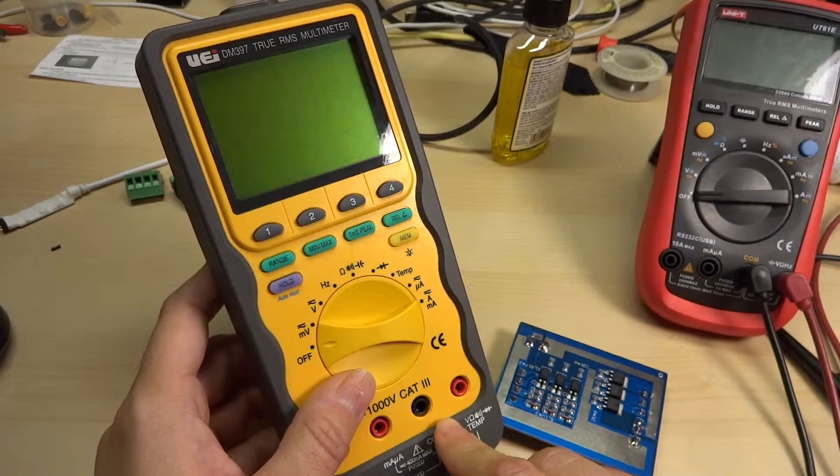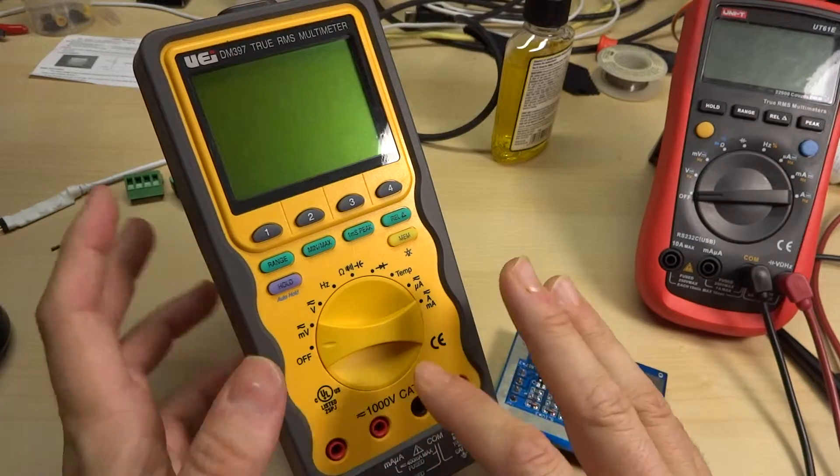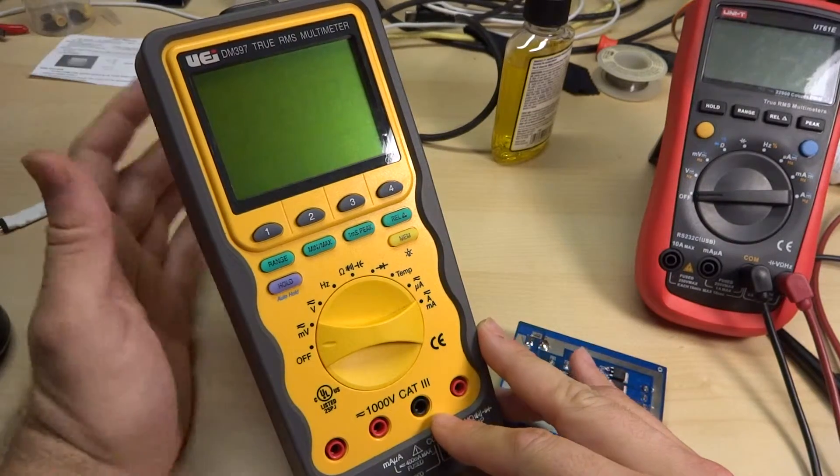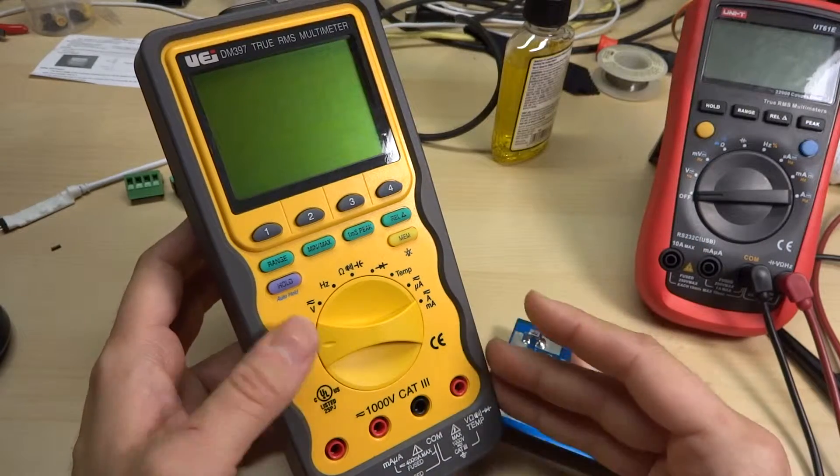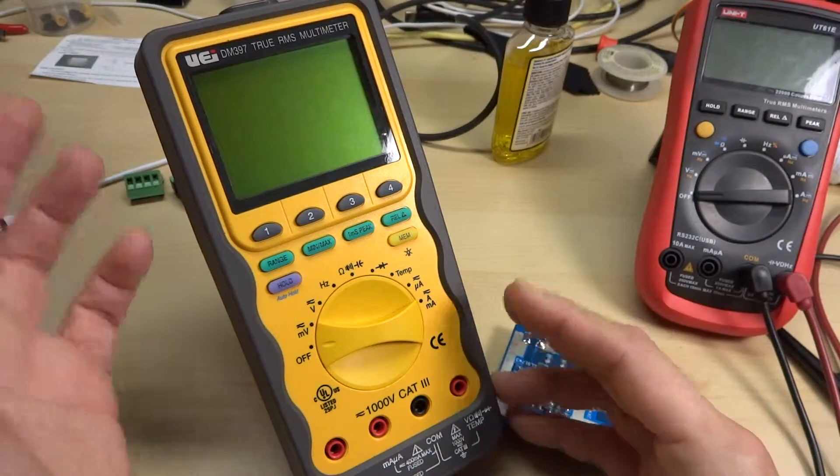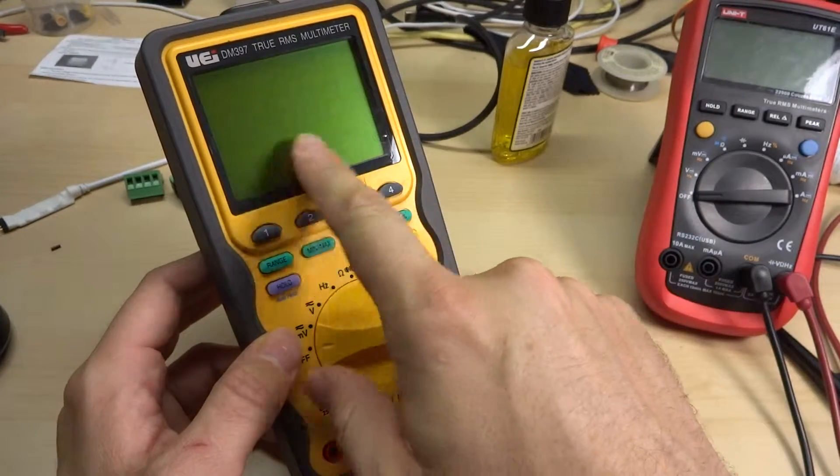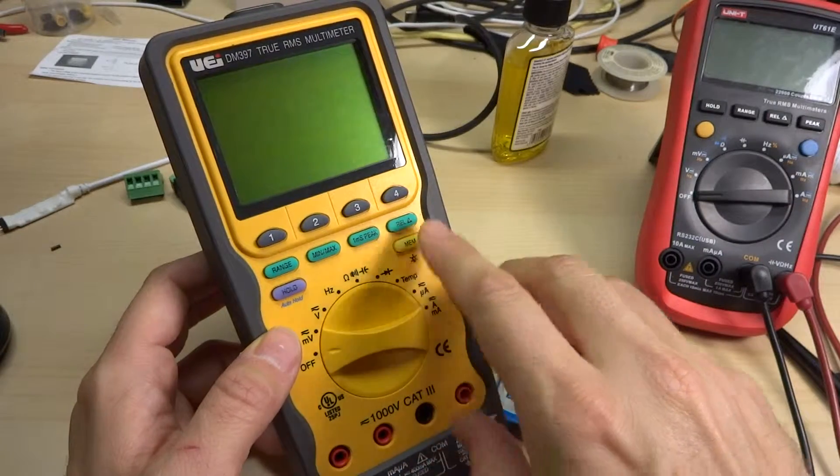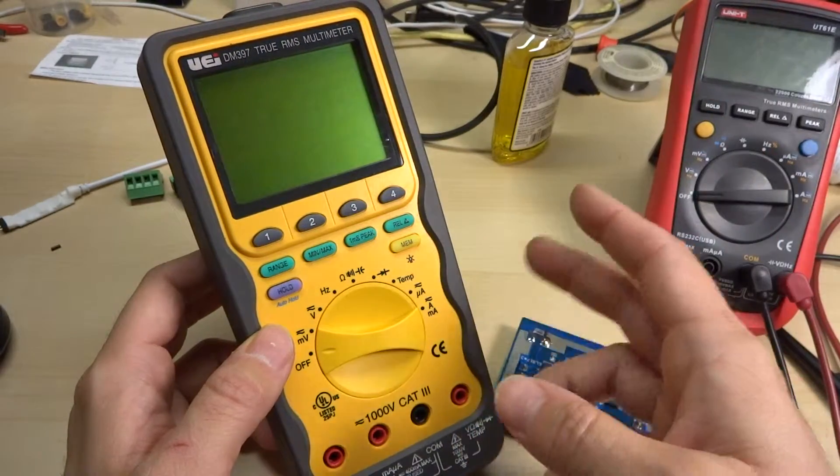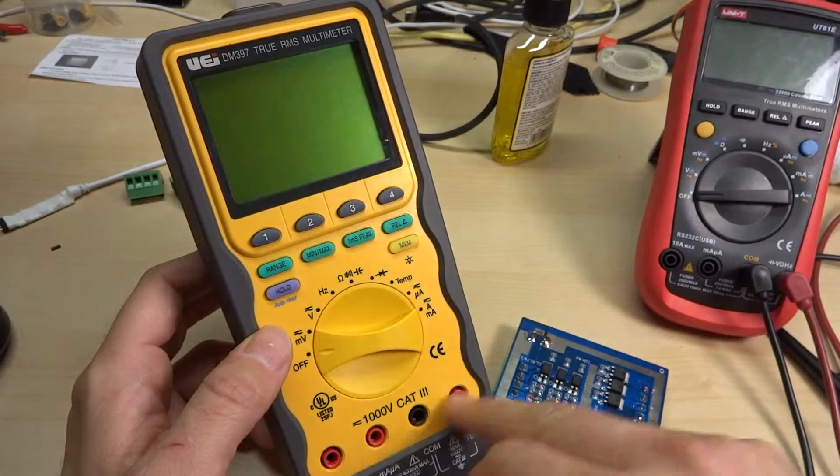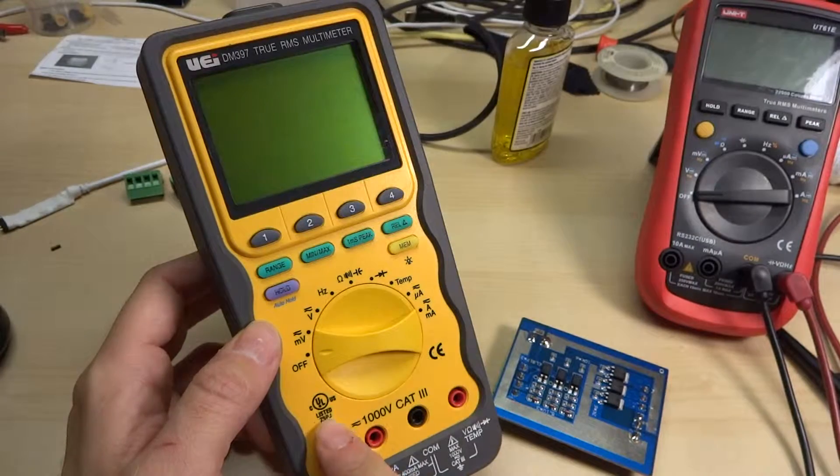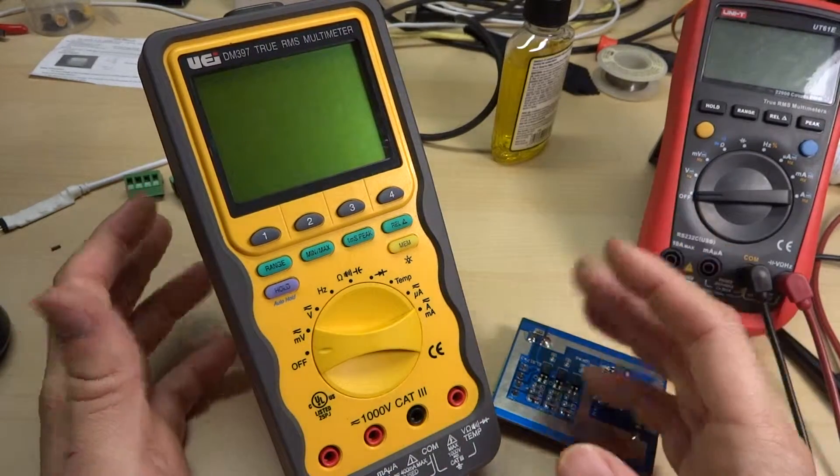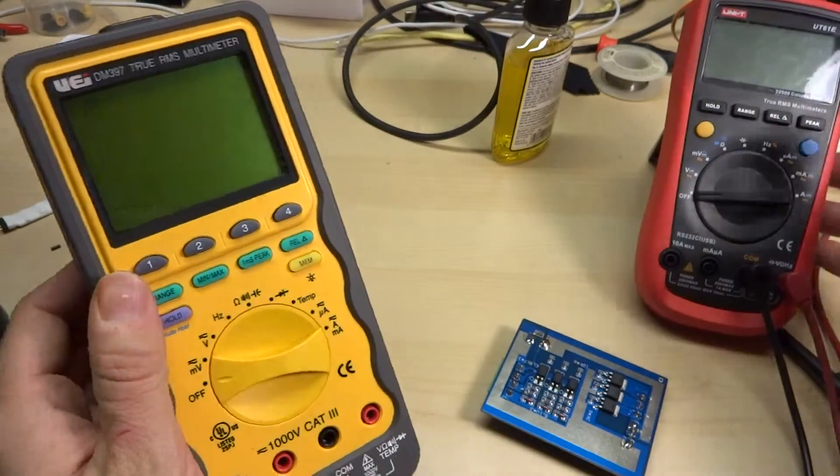I have this board here, and I was trying to test some of these resistor values, surface mount board, and I was having no problem. I was using this UEI DM397 here. Not my favorite multimeter in the world. I was given it as a gift and I'm not going to complain.